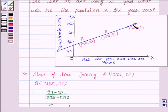Now, we have to find the population in the year 2010. So, the X coordinate on this line will be 2010 and let P be the population in the year 2010.